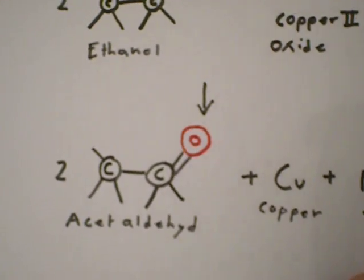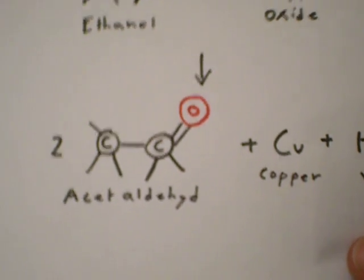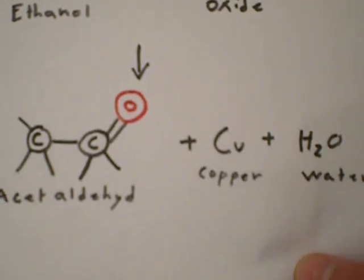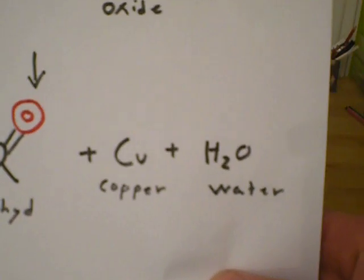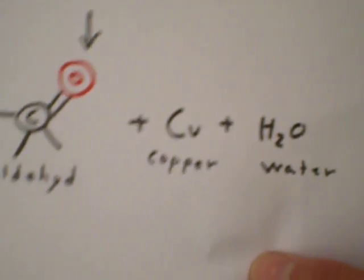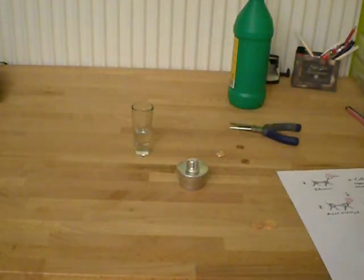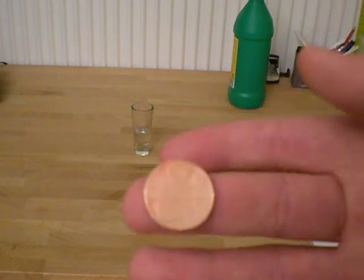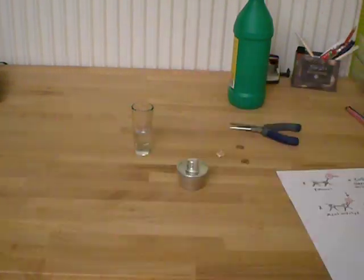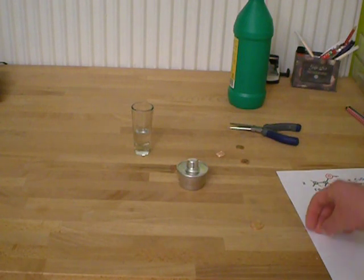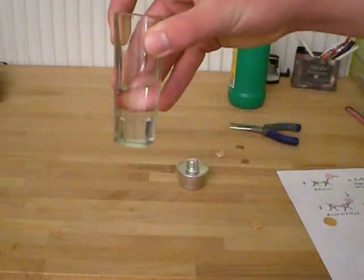Creating acetaldehyde, or in the methanol case formaldehyde, and copper, and water, which is H2O for those guys that don't know. So that's pretty much what happens here. This is just the pure copper because all the oxygen has been turned into acetaldehyde, which is now in this glass here.